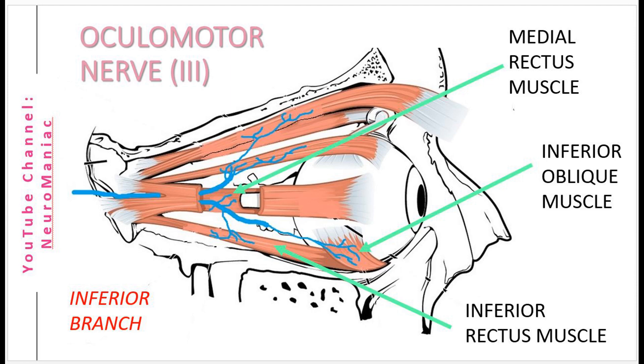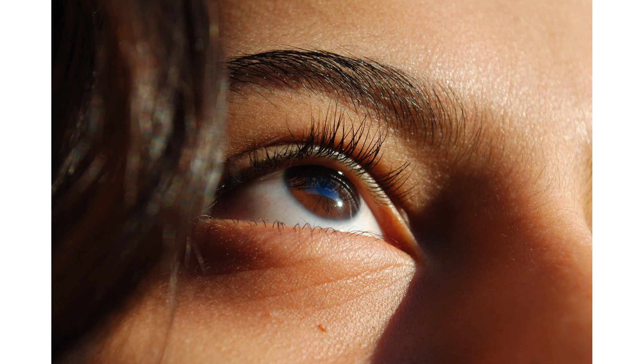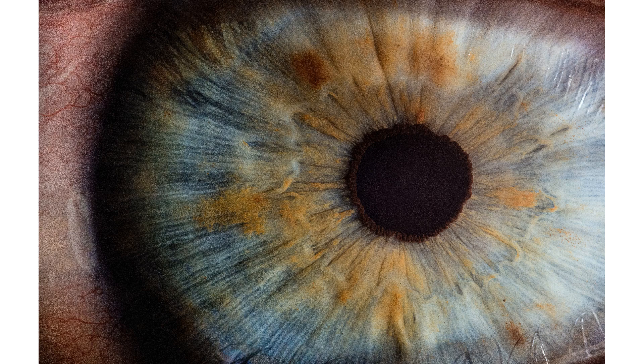Overall, the oculomotor nerve enables ocular movements such as elevating, depressing and laterally moving the eyeball, opening and closing the upper eyelid, constriction of pupils, and reshaping of the lens to accommodate for short or long range vision.